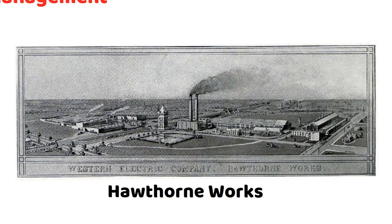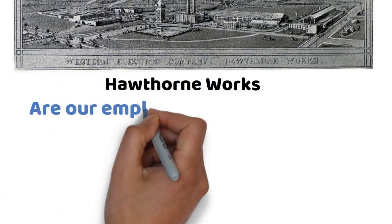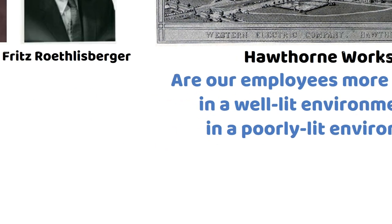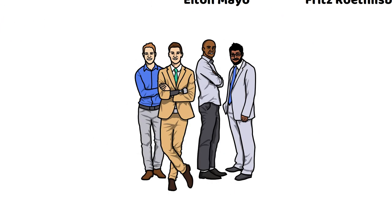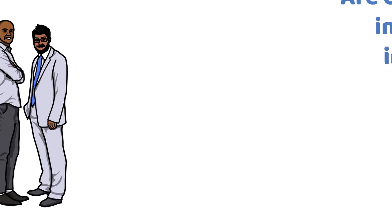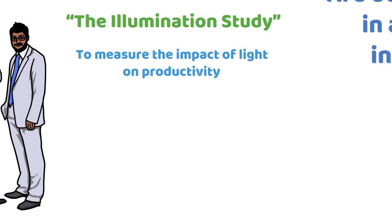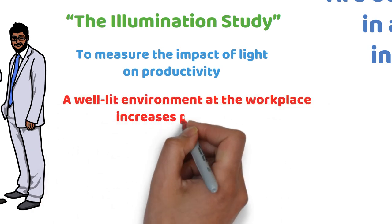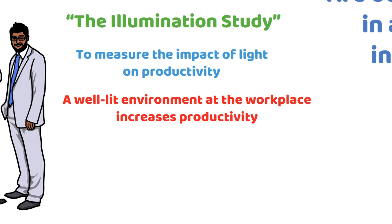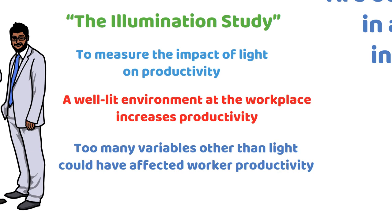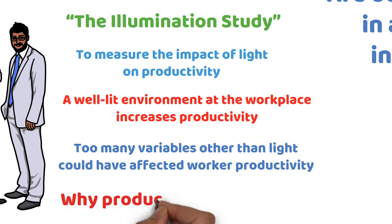Hawthorne Works was a large manufacturer operating in Illinois. There, managers asked a question: are our employees more productive in a well-lit environment than in a poorly-lit environment? To answer their question, Hawthorne Works hired some consultants and commissioned a study. The first phase of the Hawthorne studies was called the Illumination Study. It sought to measure the impact of light on productivity. The findings were not groundbreaking — they found that a well-lit environment increases productivity. But the study was inconclusive because too many variables other than light could have affected worker productivity, and researchers had difficulty understanding why productivity increased.